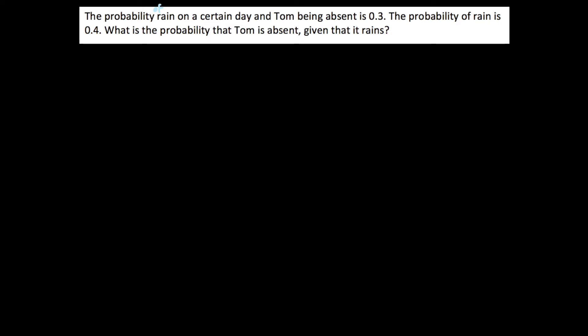Okay, so the two events we have here are rain and Tom being absent and what we want to find out is the probability of Tom being absent given that it rains. So let me quickly note down the formula before we begin. The probability of some event B given A is equal to the probability of A and B over the probability of A, right?